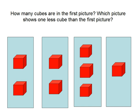How many cubes are in the first picture? Which picture shows one less cube than the first picture? The first picture has two cubes, so the answer is one cube. This is the right answer.